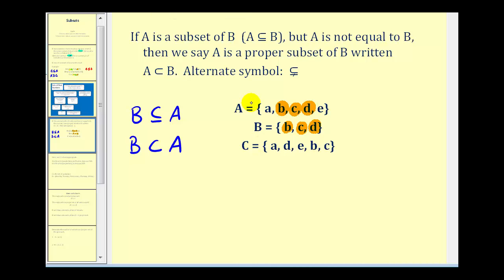But now if we take a look at sets A and C, notice that set A contains a, b, c, d, e. And set C also contains a, b, c, d, e, but in a different order. And since the order doesn't matter, we can say that C is a subset of A or A is a subset of C.